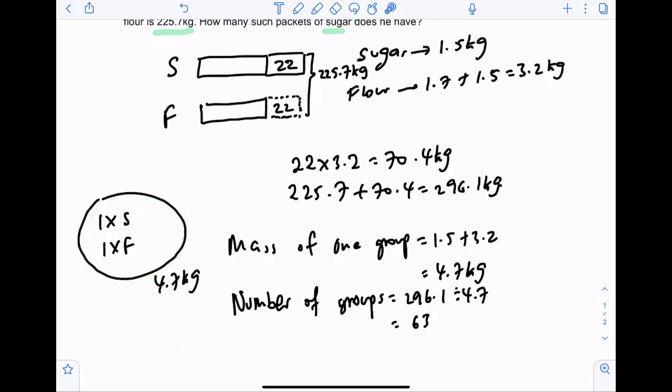So we want to find how many packets of sugar does he have? 63 times, in each of this group there's one packet of sugar, so 63 times 1 to give us the final answer of 63 packets of sugar.